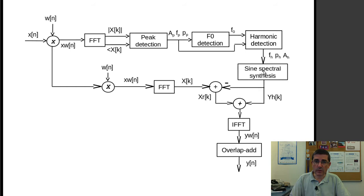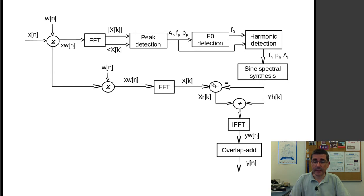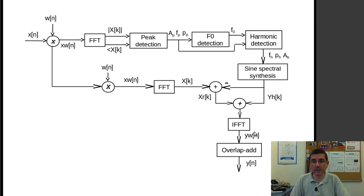What we do is recompute the spectrum of the input signal with the same parameters — the same window that is implicit in the spectral domain of these sinusoids — so that we can subtract them. Then this residual spectrum can be summed to the harmonic spectrum to obtain the time domain synthesized signal by combining the two.